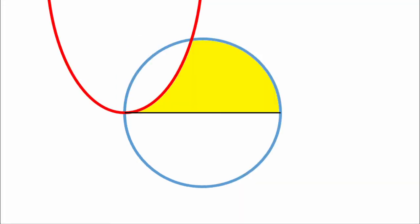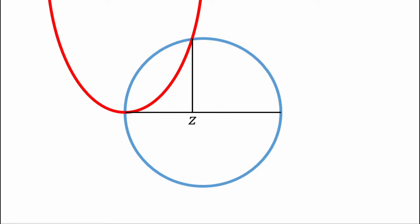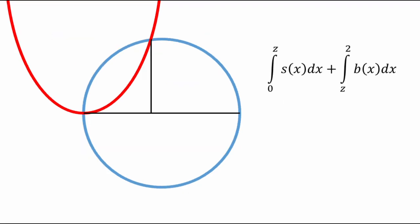So think about what we're trying to do. We're trying to find the area of the upper half of the circle which is uncovered by the shaft. And any time we hear area, we should think integration. So if we integrate from left to right, look what happens. At first this area is bounded above by s of x, but after the point of intersection, it's bounded by b of x. Let's call this intersection point z. And now we can set up this upper half area as the sum of two integrals, the first of s of x from 0 to z and the second of b of x from z to 2.